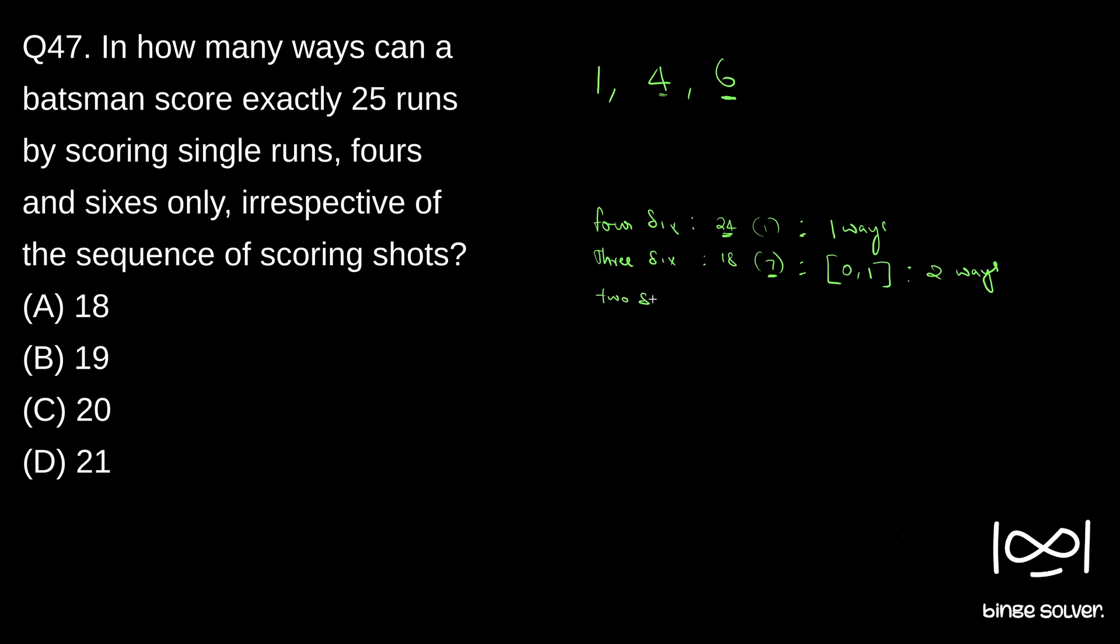Similarly, 2 sixes. If he scored 2 sixes, he will get 6×2, 12 runs. So then runs that is left is 13. So 13 can be scored with 4. Different scores of 4 will be 0 fours. 0 fours means all the 13 runs are scored by single ones. Or he could score 1 four and rest single runs or 2 fours. Similarly, 4×3 is 12. So 12 is the maximum fours he can score after scoring 2 sixes. So these are the different 4s that can have. So 1, 2, 3, 4. So 4 ways.